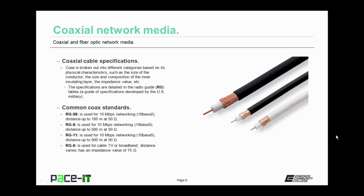RG11 was also used for 10Base5 networking, could span up to 500 meters, and had a 50 ohm impedance. Last up, we have what you'll find in most cases, which is RG6. It's used for cable television or broadband. The distance that RG6 can span varies, but it has an impedance value of 75 ohms. You will still find RG6 used today.